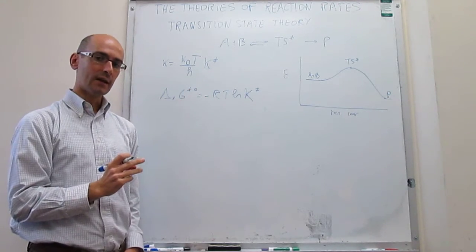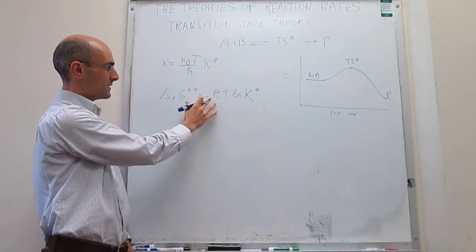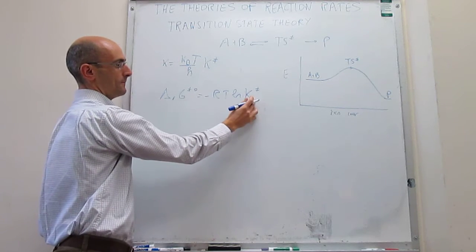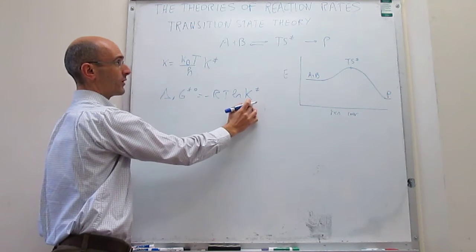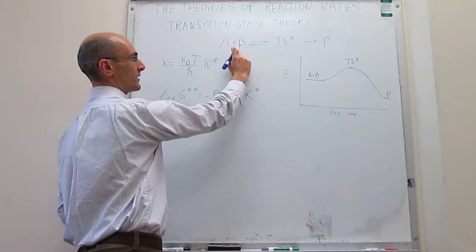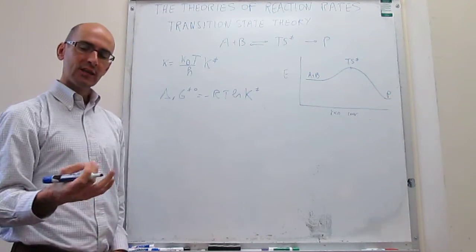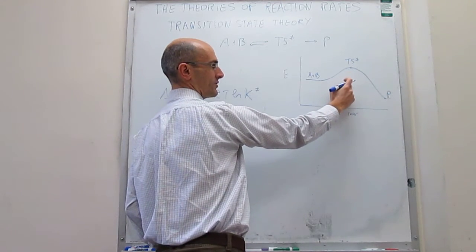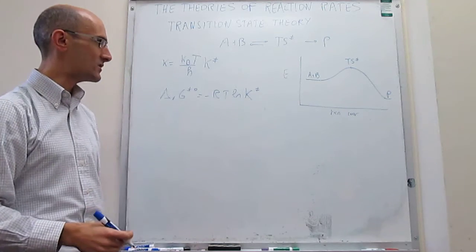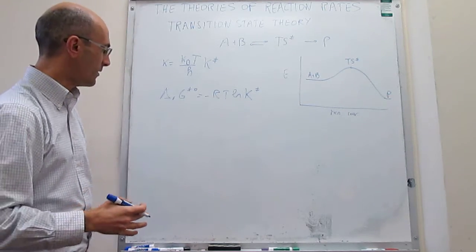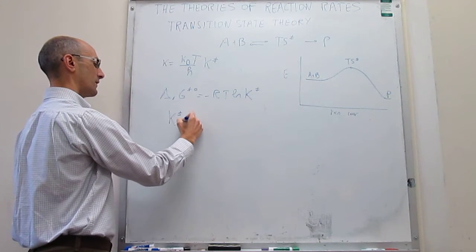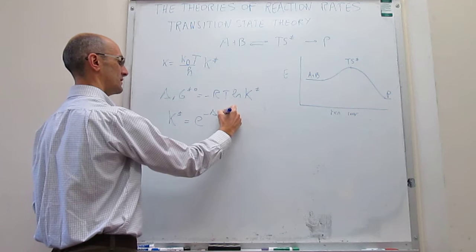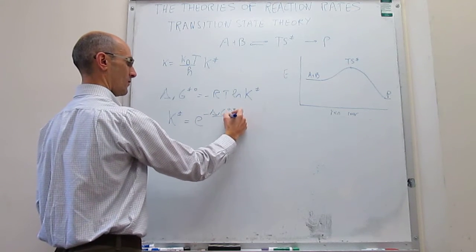The only modification that we're taking here in this expression is that now this will be the Gibbs energy of activation, and that is the equilibrium constant responsible for the equilibrium between reagents and the transition state. So the Gibbs energy of activation would be the difference in Gibbs energy between the transition state and reagents — that would be delta G of activation under standard conditions. From here, we can solve for the equilibrium constant, which is simply going to be e to the minus delta G-naught of activation over RT.